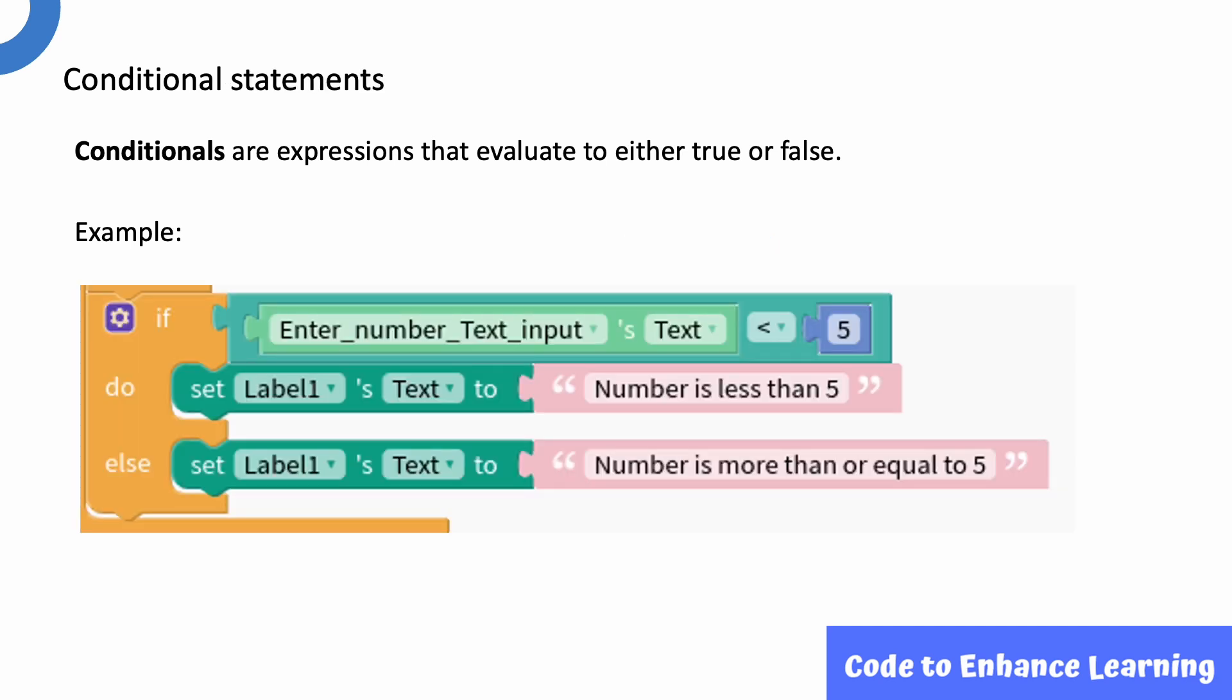Now, let us look at one more example from the code below. If the input value of the text input is 3 which is less than 5, the result of the statement would be true. Thus, the do part of the program will get executed and the label text will display 'number is less than 5'. Suppose the text input is 7 which is not less than 5. In this case, the else part of the program will get executed and the label text will display 'number is more than or equal to 5'. Let me show you how we can use these conditional statements in our app.